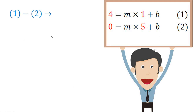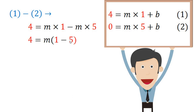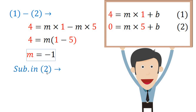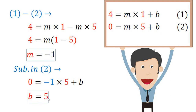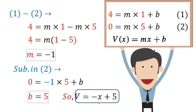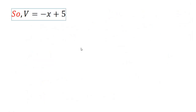Subtracting equation 2 from equation 1: 4 − 0 = m(1) − m(5), so 4 = m(1 − 5) = −4m, giving m = −1. Substituting m = −1 into equation 2: 0 = −1(5) + b, so b = 5. Therefore V = −x + 5.